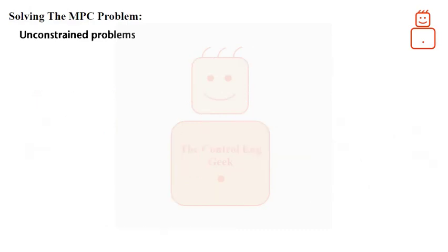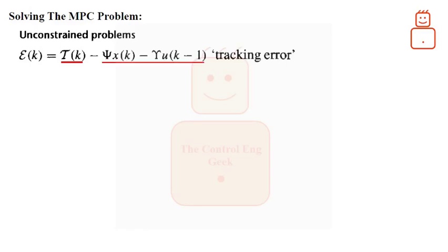To substitute the last expression into the cost function, we need to define the following. This can be thought of as a tracking error, in the sense that it is the difference between the future target trajectory tau of k and the free response of the system. The process free response occurs over the prediction horizon if no input changes are made, that is delta U of k is zero.